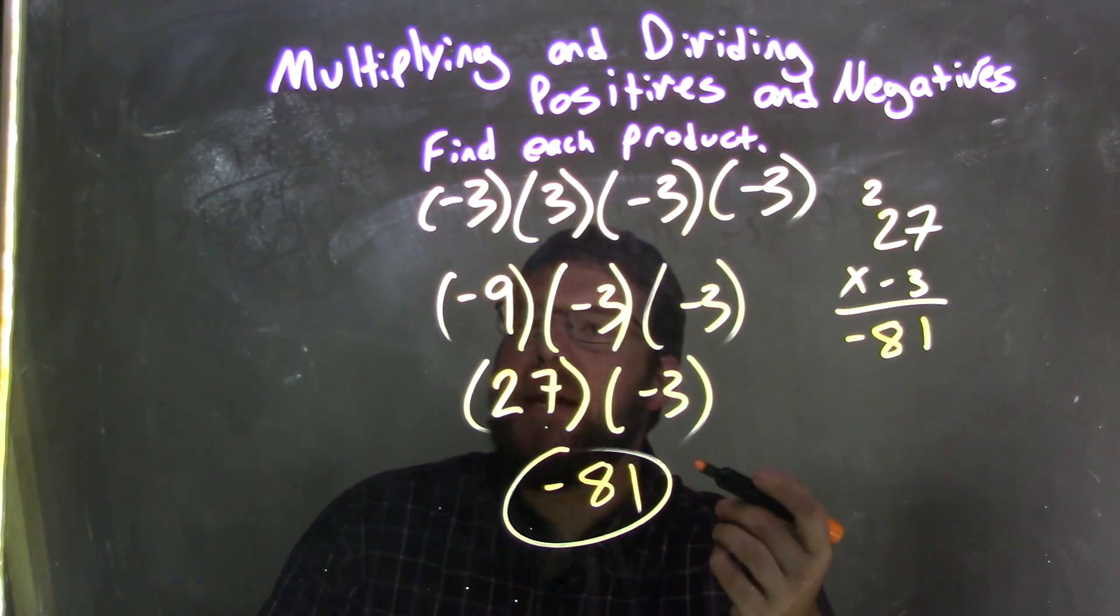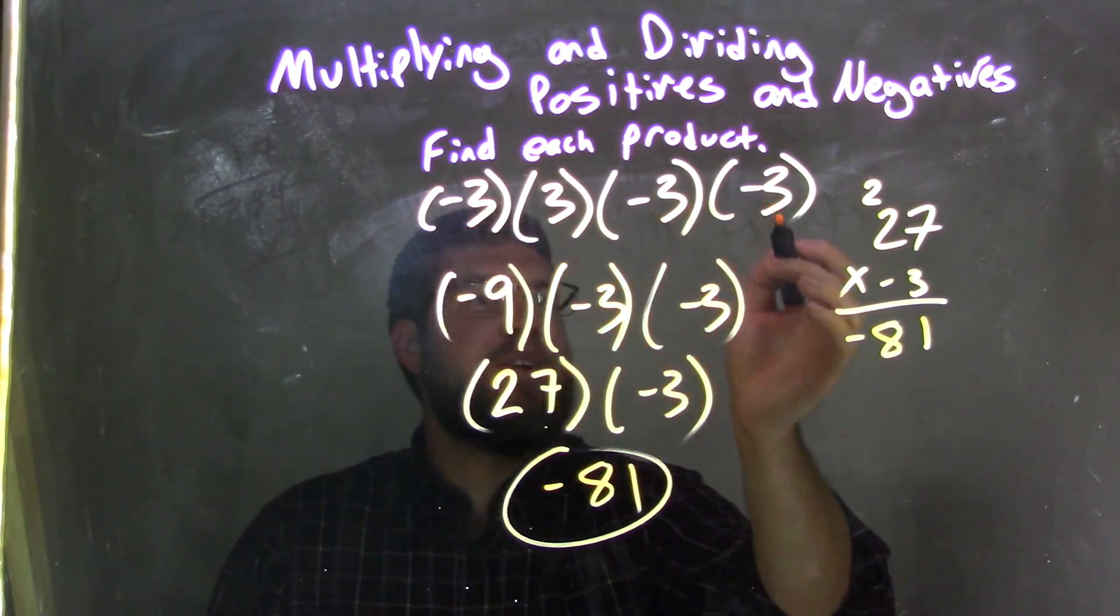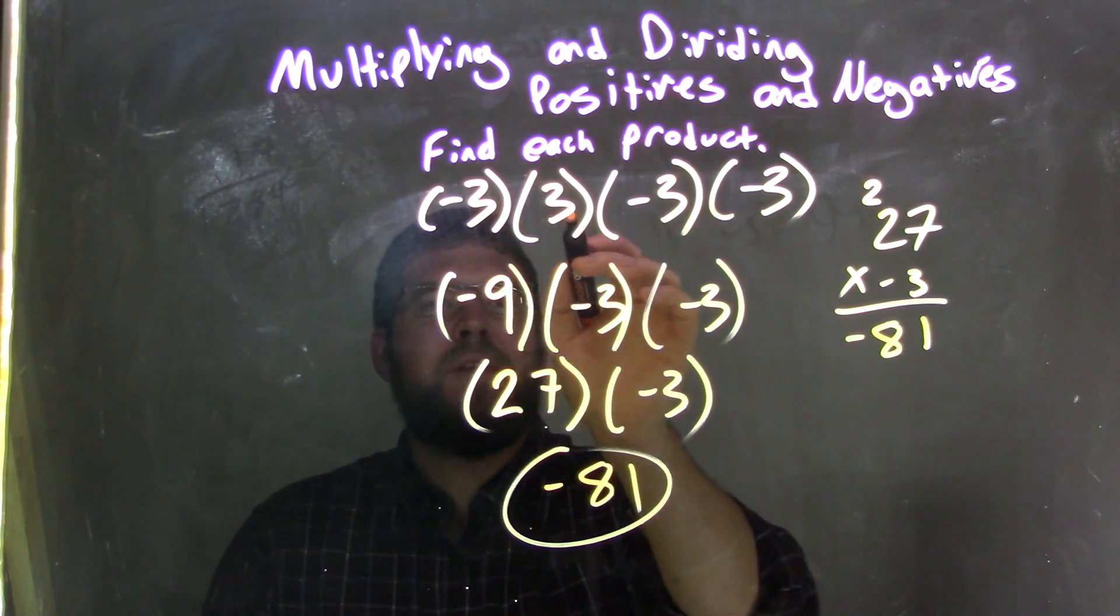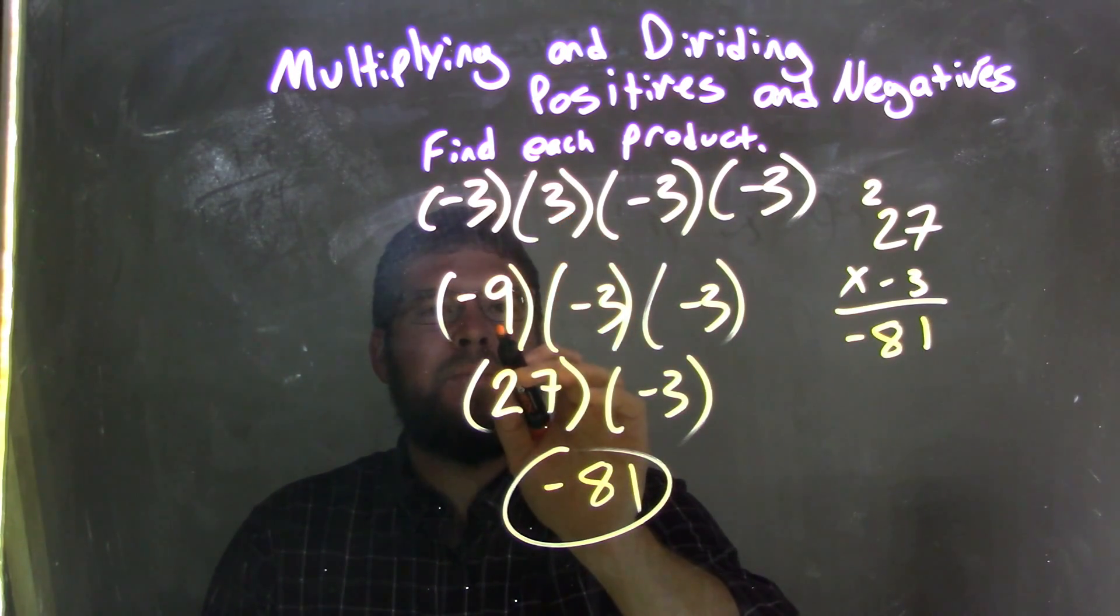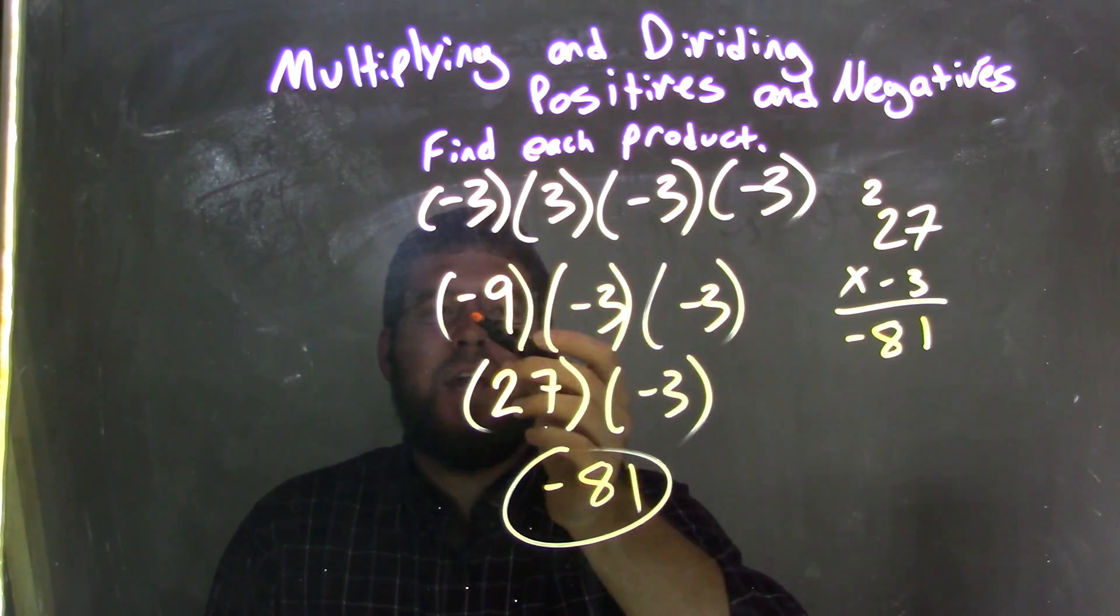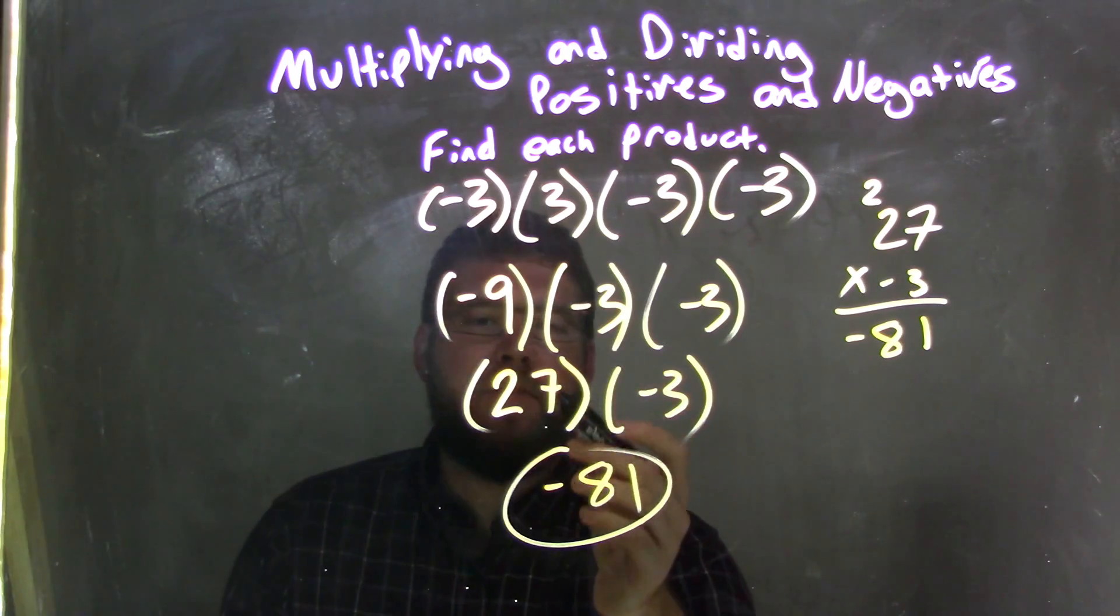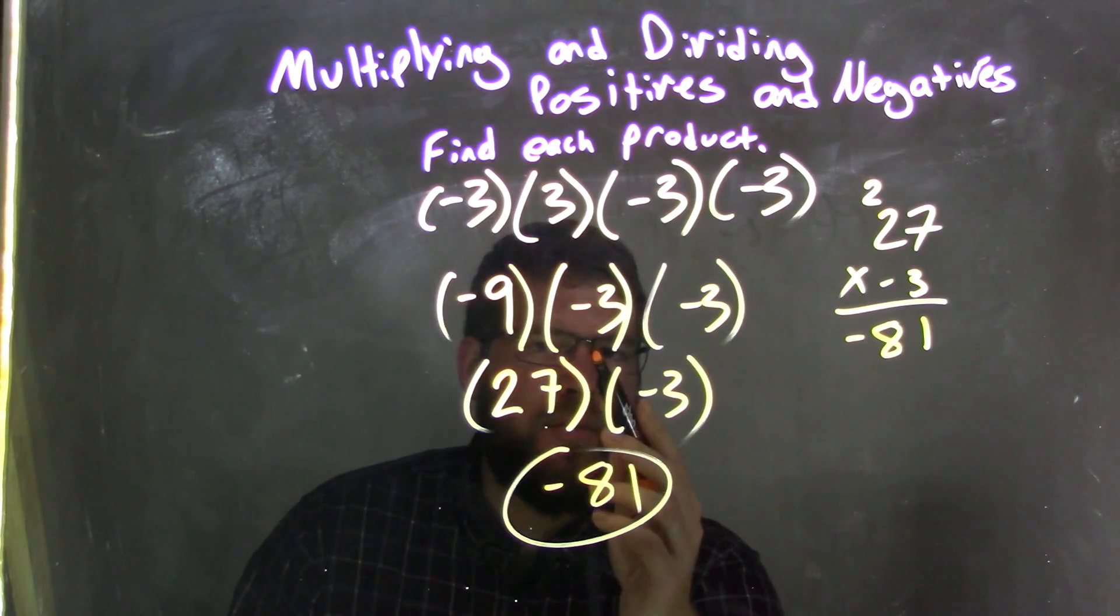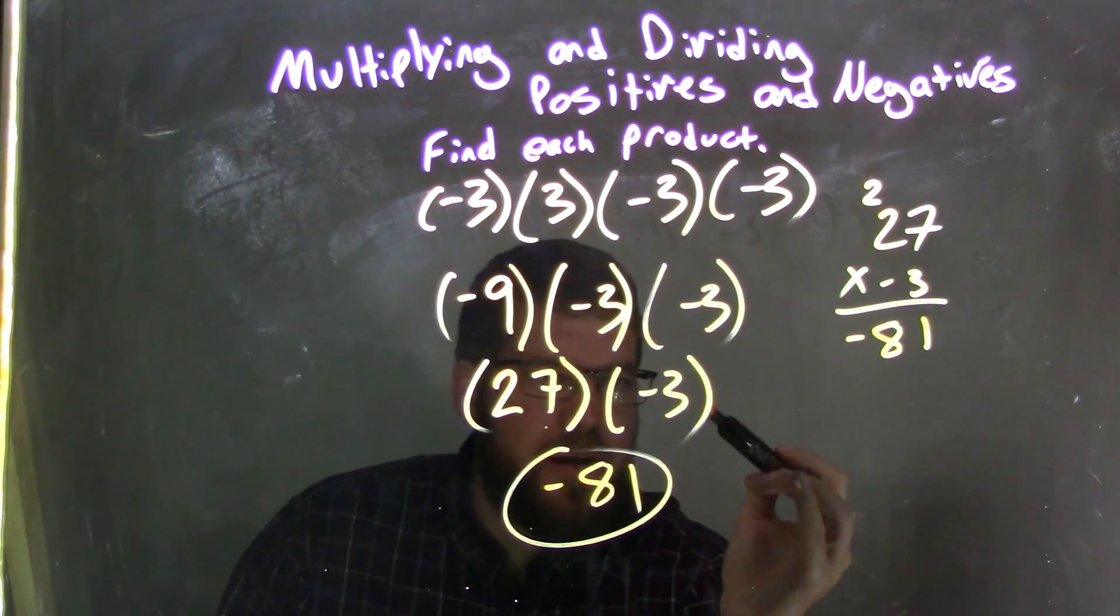So again, let's recap. We start with negative 3 times 3 times negative 3 times negative 3. Well, negative 3 times 3 is negative 9. A negative times a positive is negative. We brought down the two other negative 3's. Now negative 9 times negative 3 is a positive 27, which I put here. Two negatives multiplied together is a positive, and we brought down this negative 3.